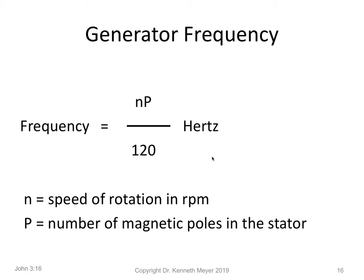The next thing we need to know about is the generator itself. A simple formula: the frequency you get out of a generator is the speed N — rotation in revs per minute — multiplied by P, the number of magnetic poles, divided by 120. That number on the bottom is just a constant used to convert revs per minute so that your answer comes out in frequency in hertz. So frequency equals NP divided by 120. If you look at the way the machine is wound, it's pretty obvious why the formula works.